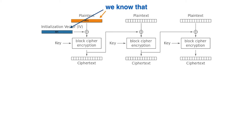We also know the IV — I'll call it IV1 — because the IV is public. You need to send it next to your ciphertext, and the other end (bank.com) cannot decrypt the ciphertext without it. Of course you need to authenticate with a MAC (message authentication code) to ensure integrity of the ciphertext and IV so that attackers in the middle can't modify either. But I won't talk about authenticated encryption here as it's not relevant for the attack.